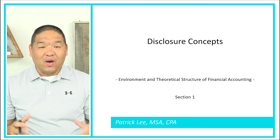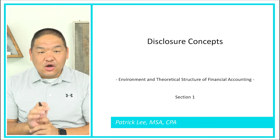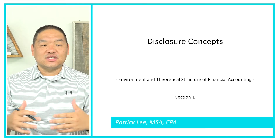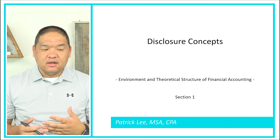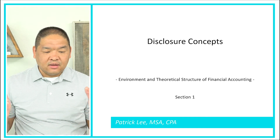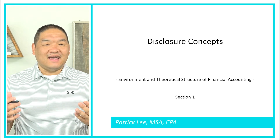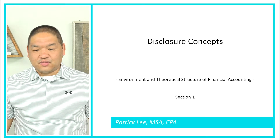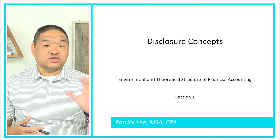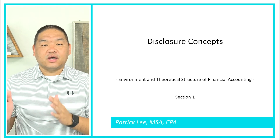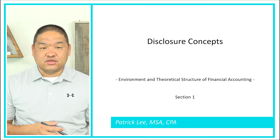We are getting into the end of section one — the last part has to do with disclosure. Disclosure is one of the most important aspects of the financial statement. Financial statements are usually easy to read and are the main part of a company's annual report, but at the end of the day there's really no context to the financial statement itself. This is where disclosures come into play.